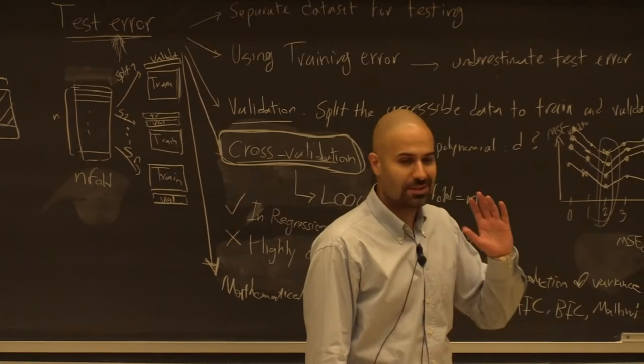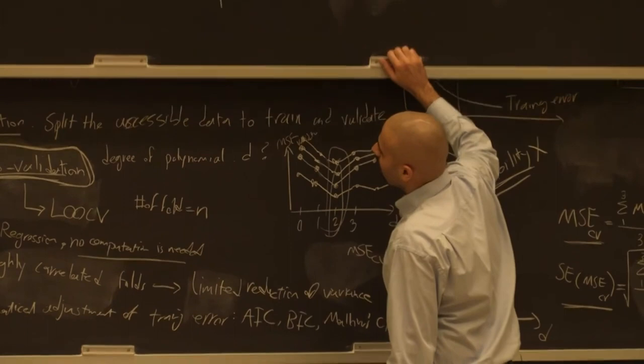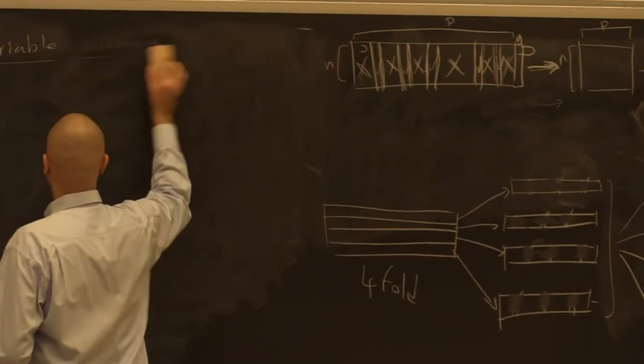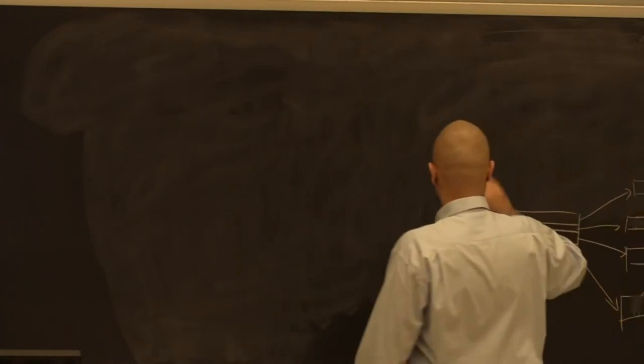We covered cross-validation. During the break, one of your classmates asked a question about variable clustering. There's a Jupyter notebook for variable clustering, and I'm going to make it available on Corcus. If you check the module page of the course, you can find it and run the code.